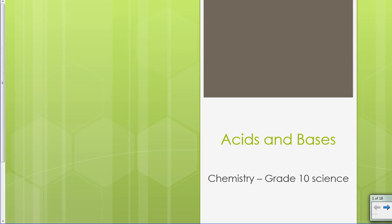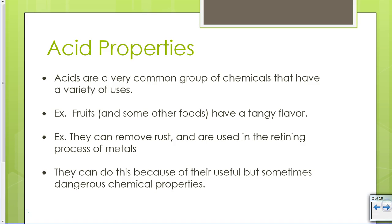All right, so acids and bases, because chemistry is a party where everybody drops the base. Acid properties. Acids are a very common group of chemicals that have a variety of uses. You see them in fruits, cleaning products, everywhere. They remove rust, they're used in refining processes of metals, and they can do this because of their useful but sometimes dangerous chemical properties.